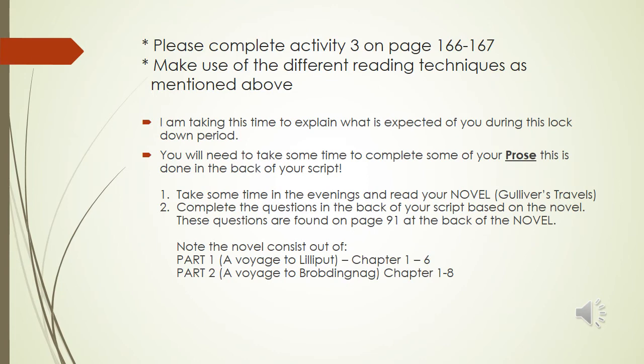You are now going to complete Activity 3 on page 166 to 167. Make sure you use the different reading techniques as mentioned above. If you look at the report on page 167, you will notice the source is the Pretoria News, which is a local newspaper, dated the 21st of June 2012. They provide you with the short heading: '251 rhino poached so far this year.'